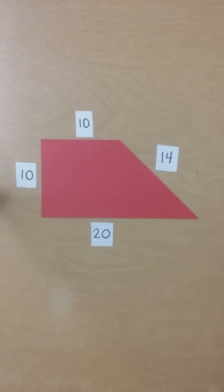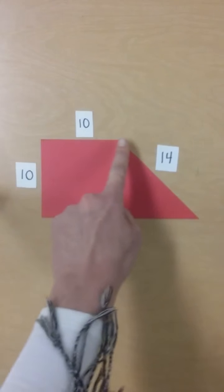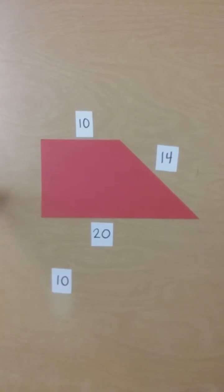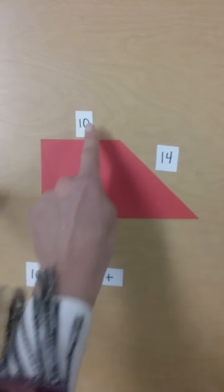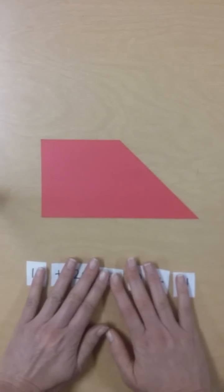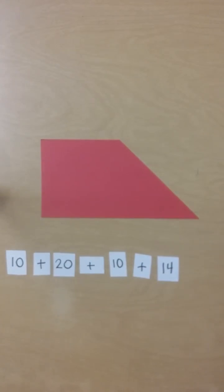So again, if I want to find the perimeter or the distance around the outside of this object, I'll add up all the sides. So 10 plus 20 plus 10 plus 14. When I add that up, it equals 54.